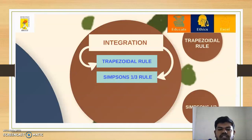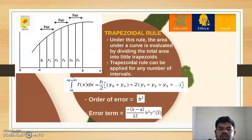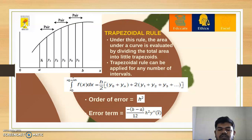To solve numerical integrations, we will discuss the Trapezoidal rule and Simpson's 1/3 rule. Under the Trapezoidal rule, the area under a curve is evaluated by dividing the total area into little trapezoids, as shown in the graph. The Trapezoidal rule can be applied for any number of intervals, either even or odd. The formula is: ∫[x₀ to x₀+nh] f(x) dx = (h/2) [y₀ + yₙ + 2(y₁ + y₂ + y₃ + ...)]. The order of error is h² and the error term is -(b-a)/12 · h² · y''(x̄).